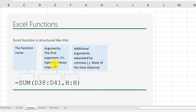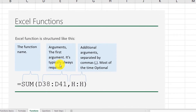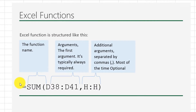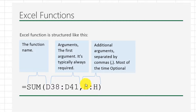Now let's look at Microsoft Excel functions. Functions are a little bit different from formulas, but they have a lot of similarity. You still need to type the equal sign, then you type the name of the function. Then typically you have mandatory arguments — which can be a cell reference, a value, or a range — and then you have a list of optional values.